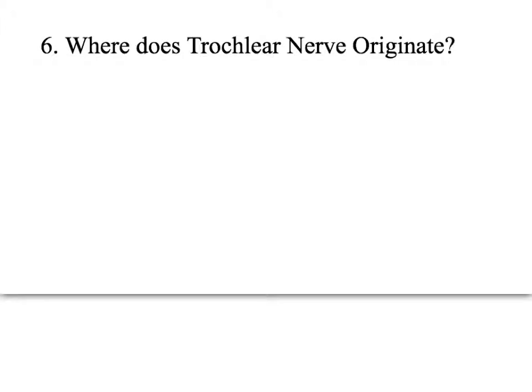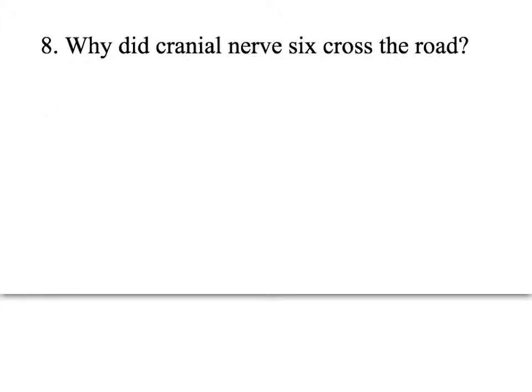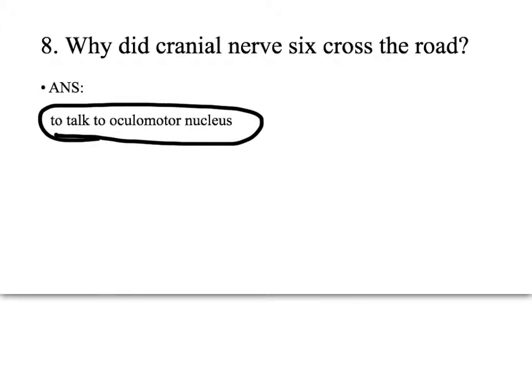Question 6: where does the trochlear nucleus originate? Answer: the midbrain. Question 7: where does cranial nerve 4 cross the midline? Answer: within the midbrain. Question 8: why does cranial nerve 6 decussate along the medial longitudinal fasciculus? Answer: it wants to communicate with the oculomotor nucleus — it crosses the midline on the MLF to synapse with the oculomotor nucleus so both eyes can move together.